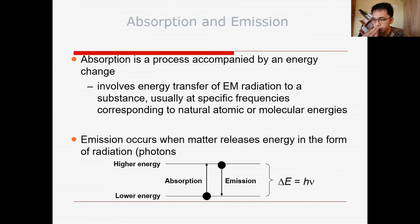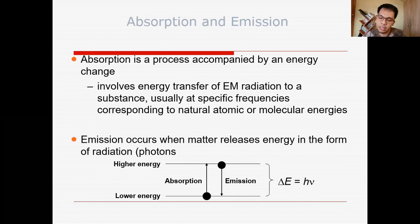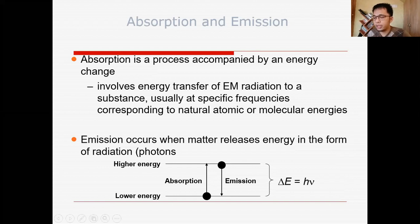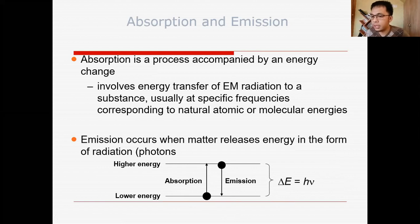Next is absorption and emission — a process involving energy change. Atoms absorb energy, causing electrons to shift to another shell — that is absorption. After absorbing, in order to return to its ground state, the atom emits light — that is emission. This is why when you heat metals, they produce specific frequencies of light. Absorption is the shift from a lower energy state to a higher energy state. Emission is when the electron returns to the ground state. The energy difference can be calculated using E = hν.